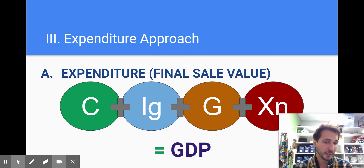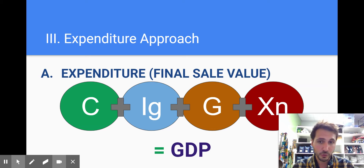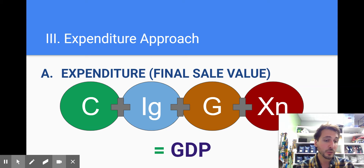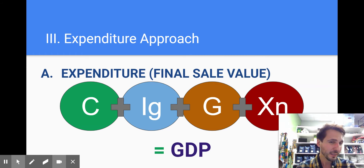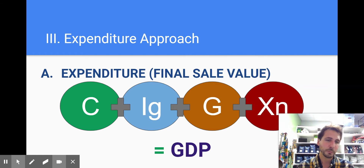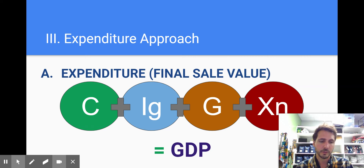Those are all the expenditures. Consumption — expenditures of consumers. Investment — expenditures of businesses who are trying to have labor assets, so that's capital. Government spending — that's obvious. And then net exports — foreign countries spending money on our goods, for example.